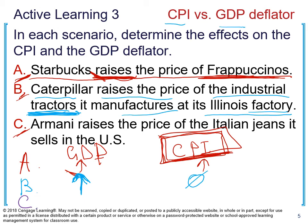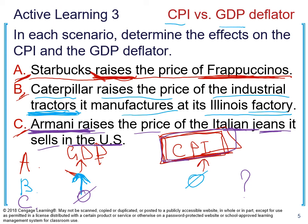For C, Armani raises the price of Italian jeans it sells in the United States. The jeans are produced in Italy and sold here. GDP is not affected because the jeans were not produced on U.S. territory. But CPI is affected because BLS includes Armani jeans in the consumer basket. So if the price increases, CPI will be affected. Just make sure you know the three differences between CPI and GDP deflator for the test.